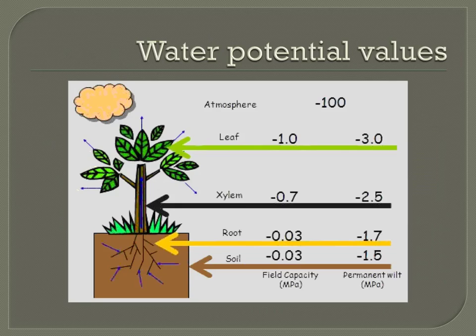One visual depiction of the importance of water potential in real life is provided on this slide. Plants draw up water from the ground through the roots, the xylem, and eventually the leaf, where it is needed for the process of photosynthesis, which will be described next unit. The reason that water naturally moves from one location to the next is because of water potential — water moves towards locations with more and more negative water potential values.